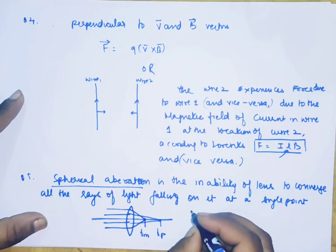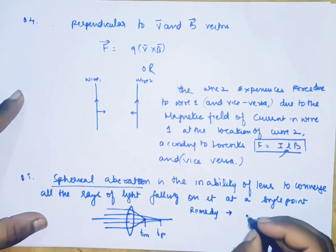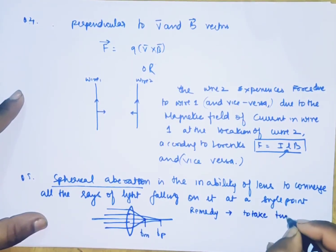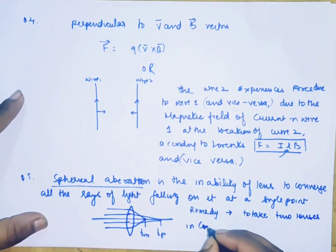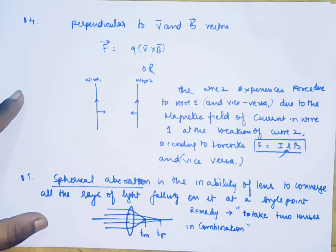Now what is the remedy? The remedy is to take two lenses in combination. You can also minimize it by dipping the lens in oil. But the standard answer is that if you combine two lenses in combination, then your spherical aberration is quite a bit lower.